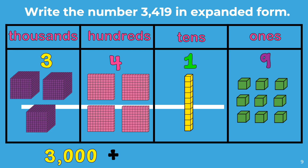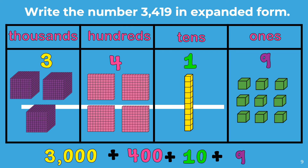the value of the 4 in the hundreds place is 100, 200, 300, 400. That is the next number. Plus, the value of the 1 in the tens place: 10. Plus, the value of the 9 in the ones place: 1, 2, 3, 4, 5, 6, 7, 8, 9. The number 3,419 written in expanded form is 3,000 plus 400 plus 10 plus 9. So in expanded form, you are adding the value of each of the digits.